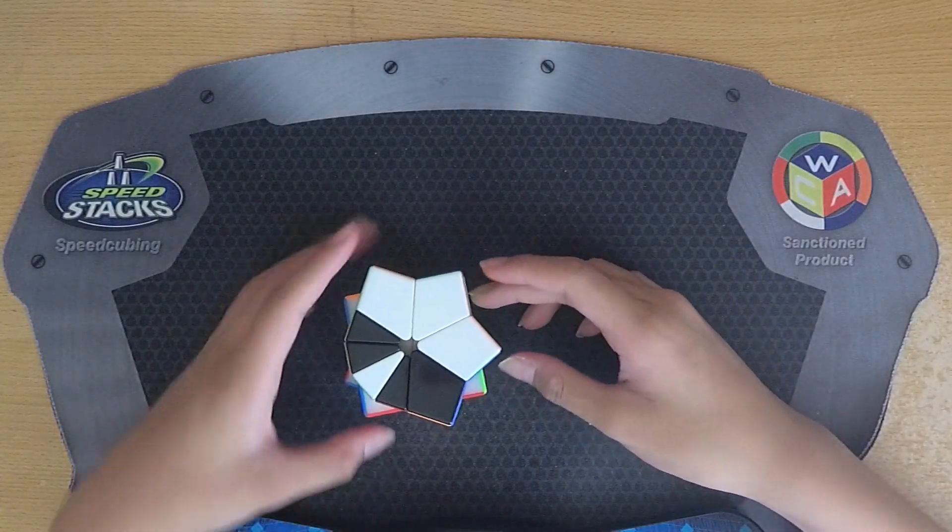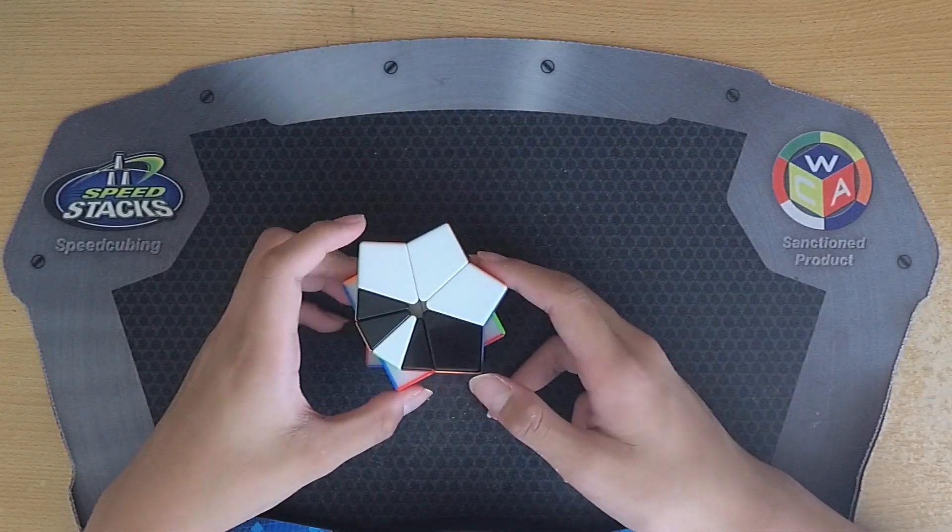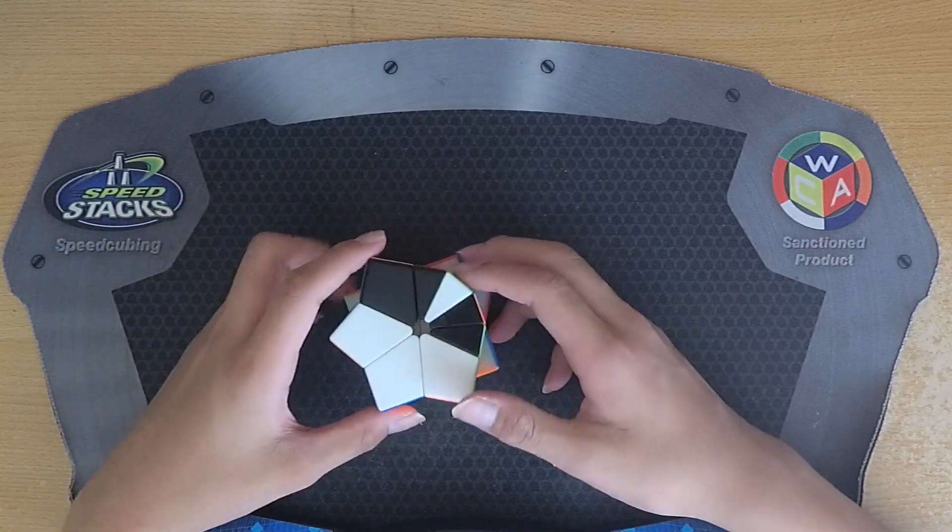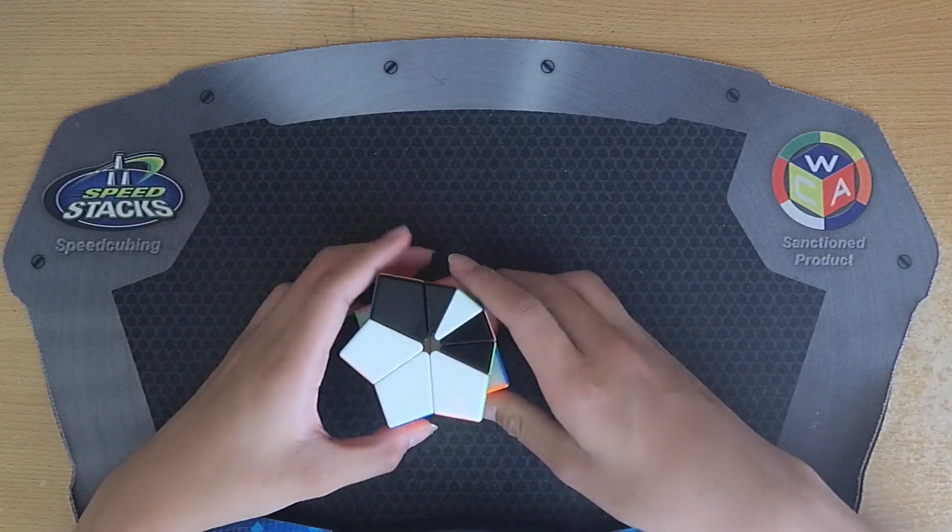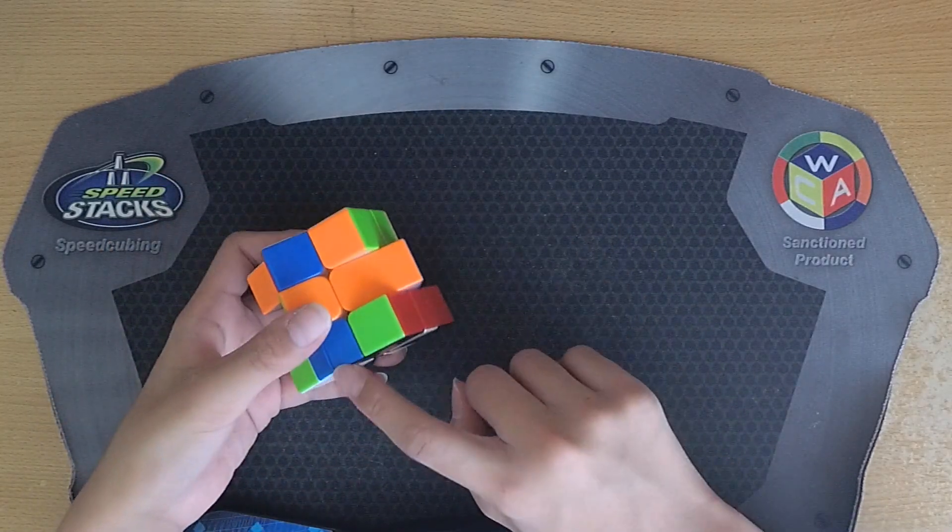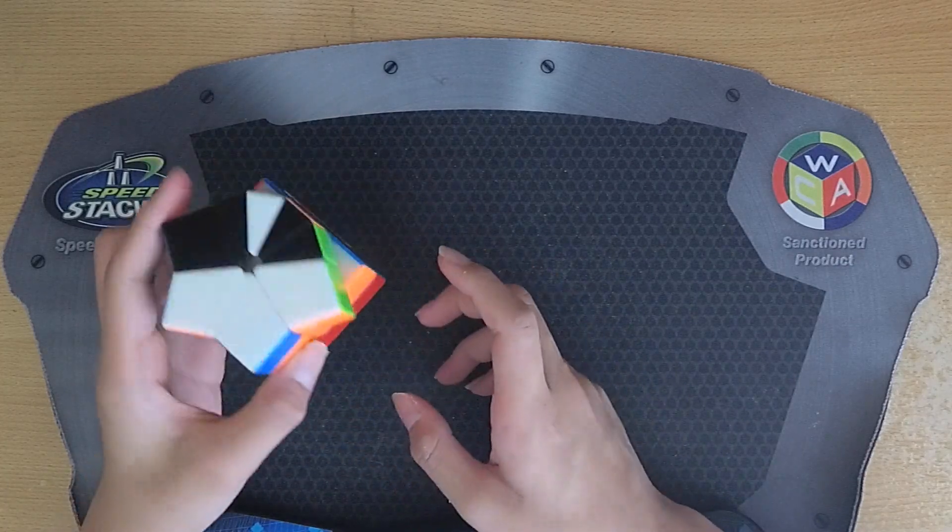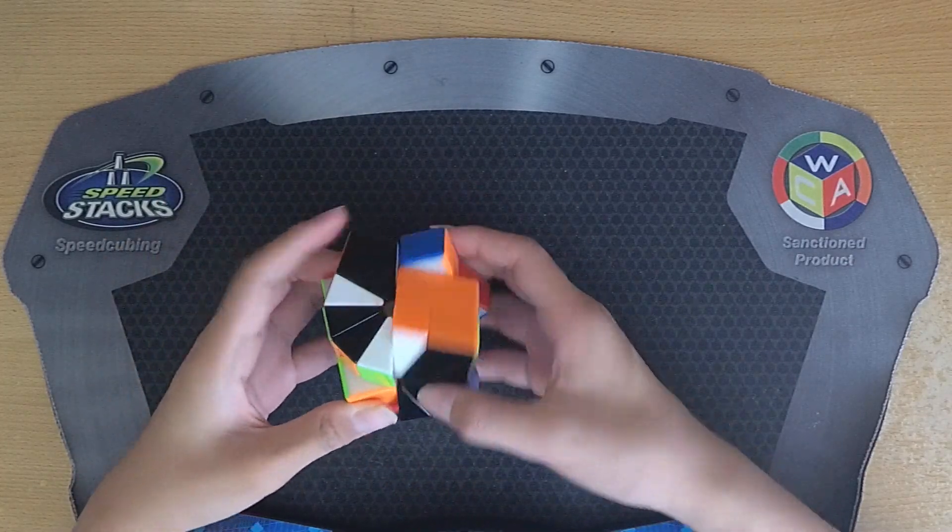The next solve was a 7.04 with Scallop Fist as my cube shape. First of all I held orange up front and I traced even. So to solve even I'm gonna first of all move this pair kind of to the side and I'll just solve Scallop Kite like this.